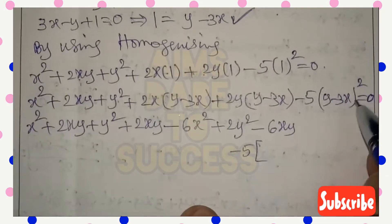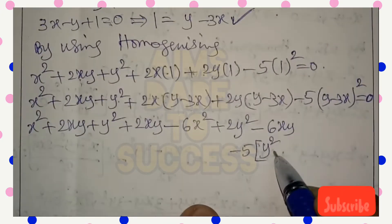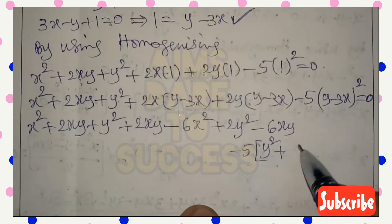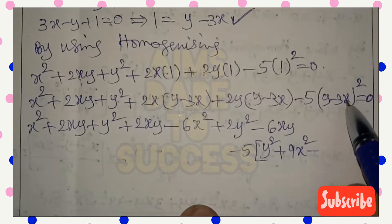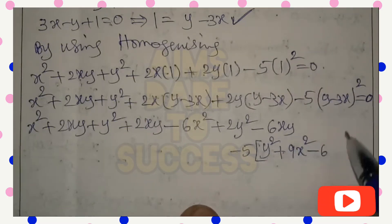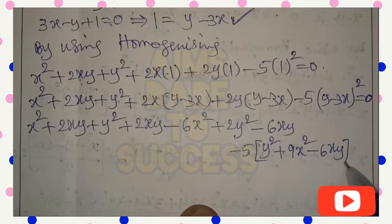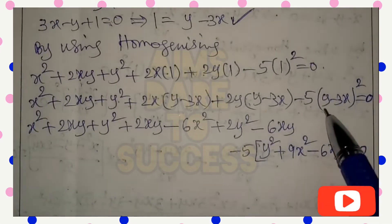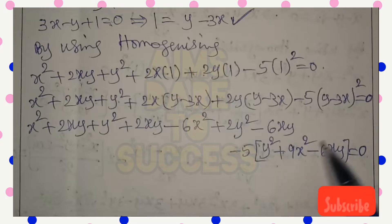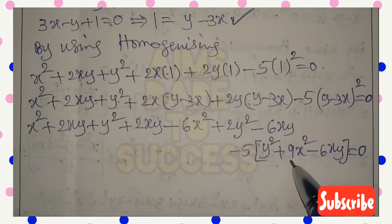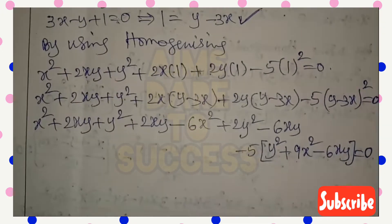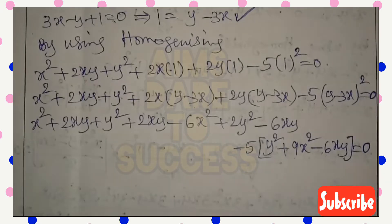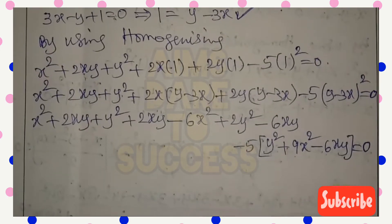Expanding -5(y - 3x)² using (a - b)² = a² + b² - 2ab: y² + 9x² - 6xy, then multiplied by -5 gives -5y² - 45x² + 30xy. Now collecting all x² terms, xy terms, and y² terms separately.